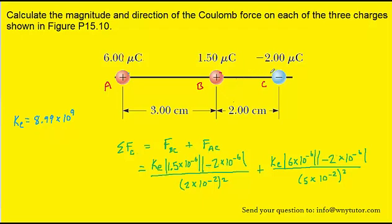So charge B being positive is going to attract charge C, so it's going to pull it to the left, and we can label that force as FBC, the force that B is exerting on charge C. Similarly, charge A is positive, so it too will pull charge C to the left, and we can label that FAC.